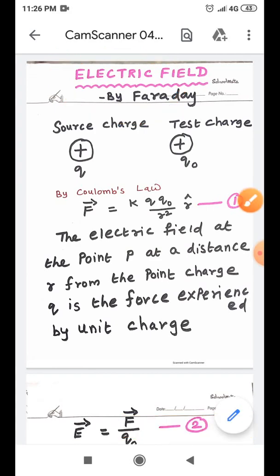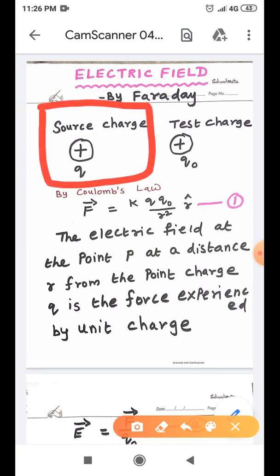So, in order to understand the electric field concept, students, first of all, let us consider a source point charge. It is the source point charge, Q plus Q. So, when the source point charge is alone, it cannot produce any attraction or repulsion.